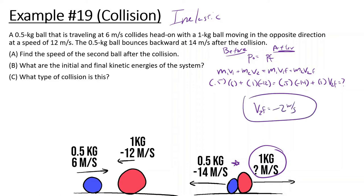So what this means is the second ball is moving 2 meters per second to the left after they collide. Next question: what are the initial and final kinetic energies of the system? What type of collision is this?